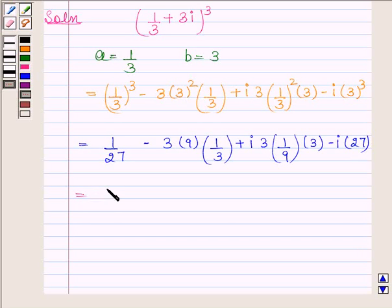and this is equal to 1 by 27. We can cancel 3 from both numerator and denominator so we are left with minus 9 plus 3 into 3 is 9 so we have 9 by 9, 9 by 9 is 1 so we are left with only iota minus 27 iota.